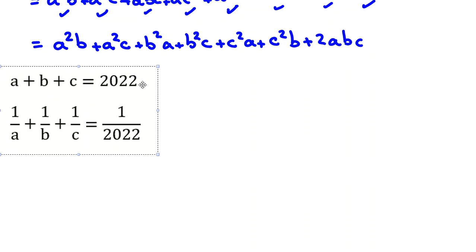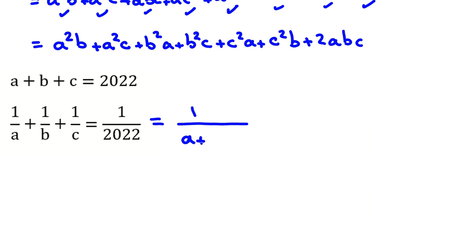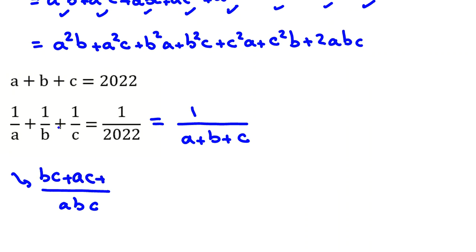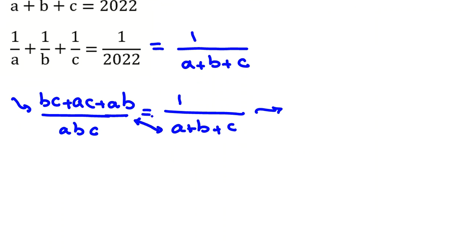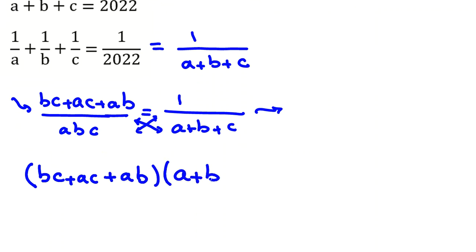What can we say? Considering these two conditions, we can write 1 over A plus 1 over B plus 1 over C. Instead of 2022 on the right side, I replace it with A plus B plus C. Using a common denominator, the left side becomes (BC plus AC plus AB) over ABC, equal to 1 over (A plus B plus C). Cross-multiplying: (BC plus AC plus AB) times (A plus B plus C) equals ABC.